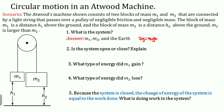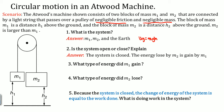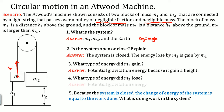Is the system closed? It says negligible friction and negligible mass, so nothing is converted into drag or thermal energy — the system is closed. Therefore, you can use conservation of energy. The energy lost by M2 is gained by M1. M1 gains potential energy because it moves up and gains height H. M2 loses potential energy because it comes down and loses height H.